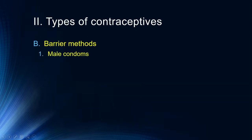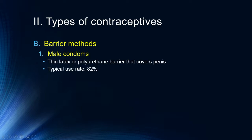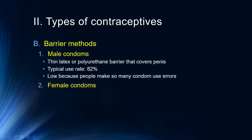Barrier methods: male condoms are the most commonly used — a thin latex or polyurethane barrier that covers the penis. A huge issue is increasing numbers of latex allergies, so there are polyurethane condoms available. Typical use rate is about 82%, meaning again about two out of ten times it fails. This is low because a lot of people make condom use errors. Whitman Walker Clinic in Washington DC has great videos on how to use a condom effectively. Biggest issue is fit — better-fitting condoms are important because they need to be comfortable for people to use them.